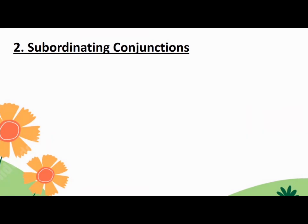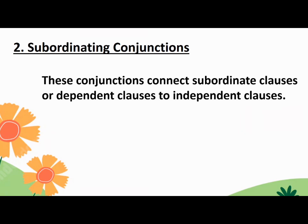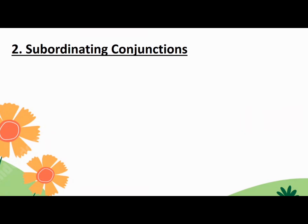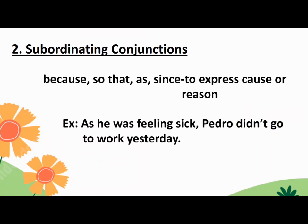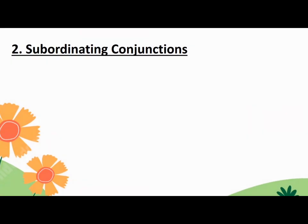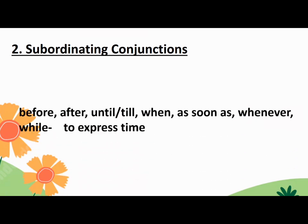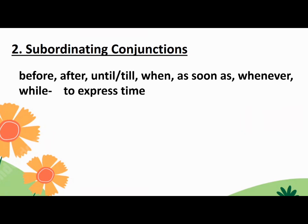The next transitional device is subordinating conjunctions. These conjunctions connect subordinate clauses or dependent clauses to independent ones. Examples used to express cause or reason are: Because, So that, As, Since. Example: As he was feeling sick, Pedro didn't go to work yesterday. Other examples used to express time are: Before, After, Until, Till, When, As soon as, Whenever, and While. Example: The baby cries whenever he feels hungry.